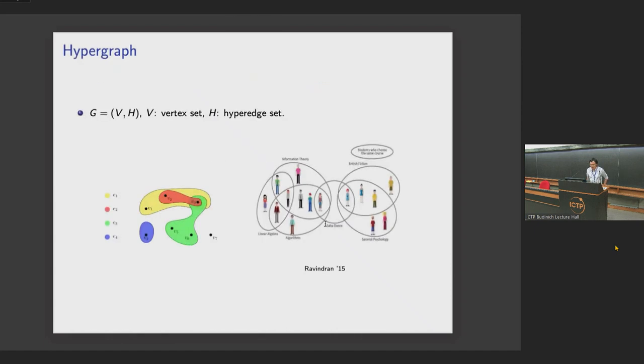First of all, hypergraph is a classical object in combinatorics and theoretical computer science. It's just a slight generalization of graphs. Instead of having vertex and edge sets, we have a hyperedge set. On the left-hand side, we can have seven vertices and different colors of the set is a hyperedge. You could have hyperedge of size one, two, three.